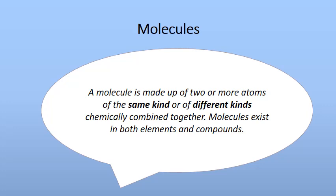Can you give an example of a molecule made of only carbon combined together? The answer is diamond — as mentioned, in diamond only carbon is present, so diamond is a molecule made up of more than one carbon atom. An example of different kinds of atoms combining together is carbon dioxide (CO2), which is made up of carbon and oxygen — a molecule containing different types of atoms that are chemically combined. Molecules can exist in both elements and compounds.